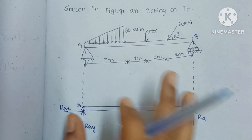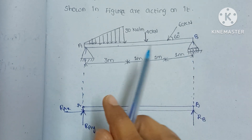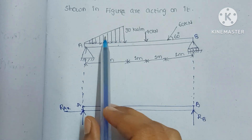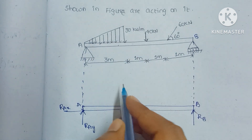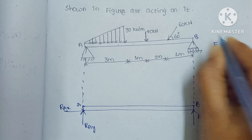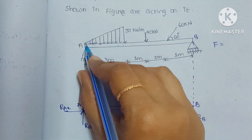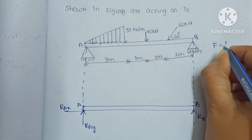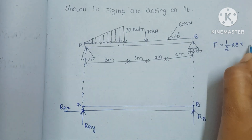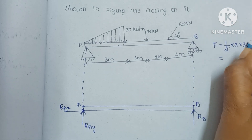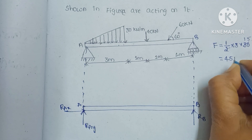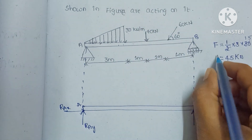To convert the uniformly varying load into a point load, we multiply the areas. The load equals half into length into height, which is half into 3 into 30. So two 15s give us 15, then 15 into 3 equals 45 kilo Newtons. So we get the equivalent point load as 45 kN.